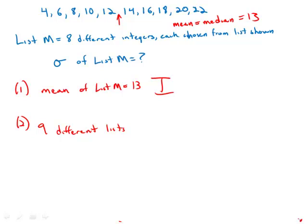So we could leave out four and we'd have a list. Leave out six, we'd have another list. Leave out eight, we'd have another list, and so forth. Each one of those lists would have a different standard deviation. And so there are nine possible lists, each with different standard deviations, so there's no way to know what the standard deviation of M would be purely from this. So this is also insufficient.